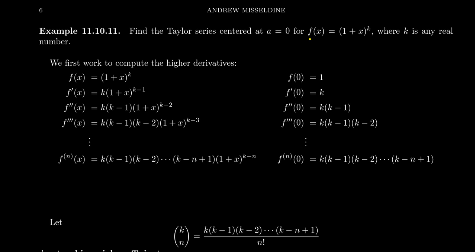The function under consideration is f(x) = (1+x)^k, where k is any fixed real number that won't change throughout this process. The reason we focus on this function is that if we're going to describe a Maclaurin series, the derivatives have to be somewhat predictable. The nice thing about (1+x)^k is that by the power rule, we can predict what those derivatives will be.